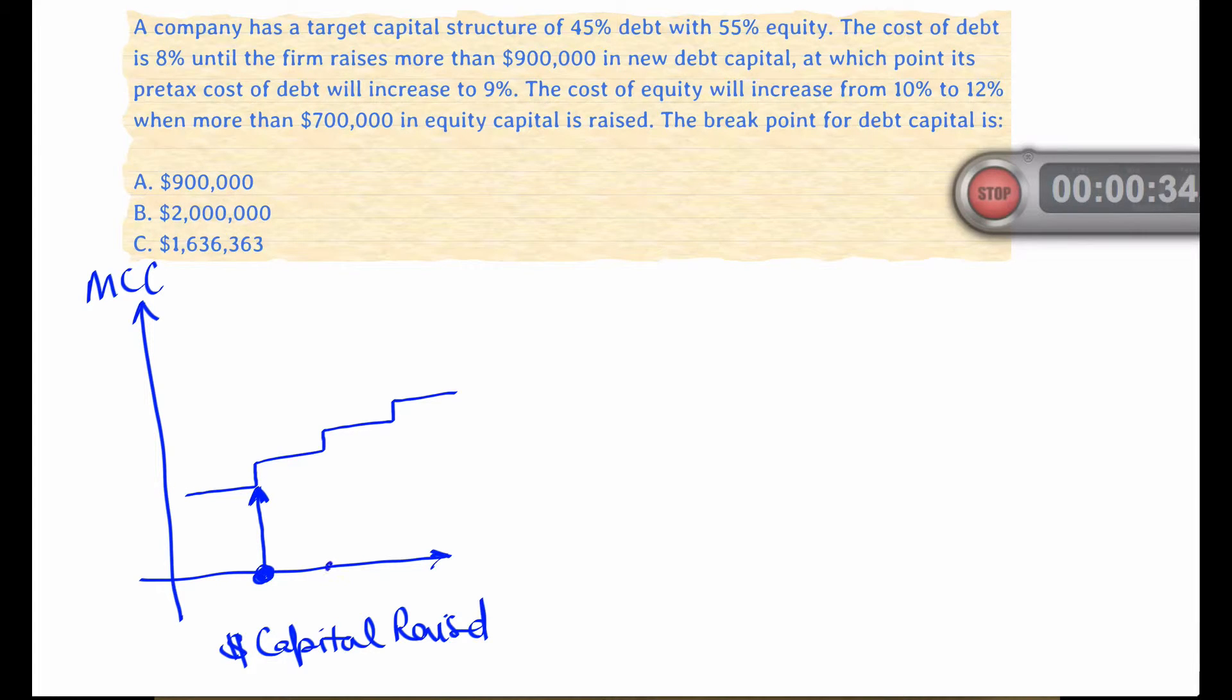The marginal cost of capital will of course increase if either the cost of debt or equity increases. Now the question here is asking for the break point for debt capital. There is a change in the cost of debt which means there will be a change in the weighted average cost of capital when more than $900,000 of debt is raised.